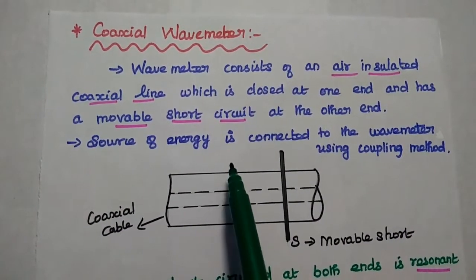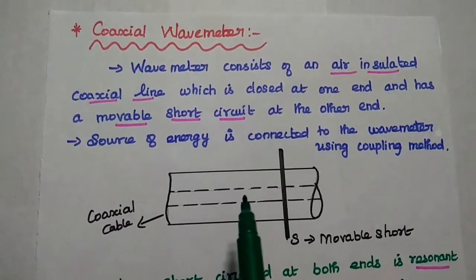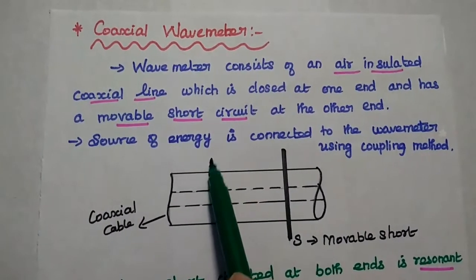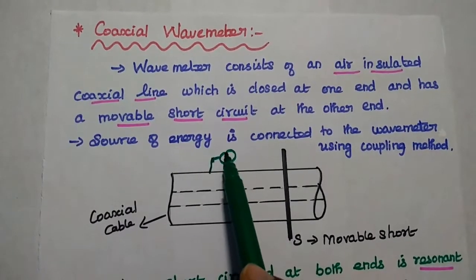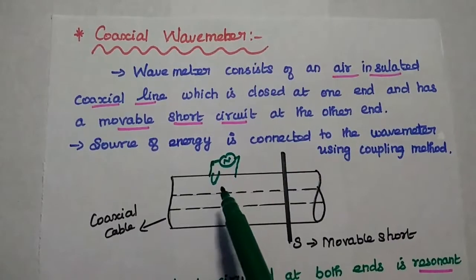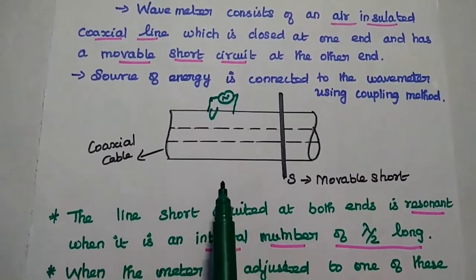Here, the source of energy is connected to this wave meter using coupling loop method. That means we can connect the source of energy to this coaxial cable using coupling method.